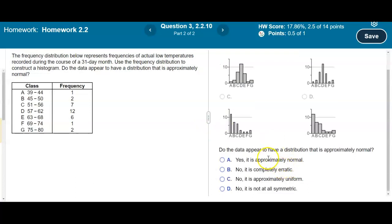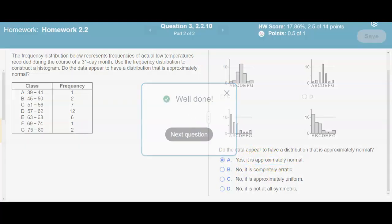Okay, now we need to determine, do the data appear to have a distribution that is approximately normal? Well it looks like we're going to draw a bell curve, and that bell curve is going to show that it's approximately normal. So we would say yes, it is approximately normal.